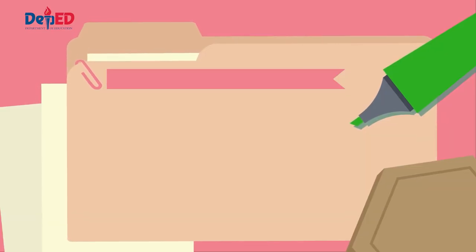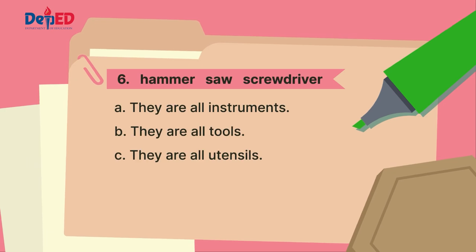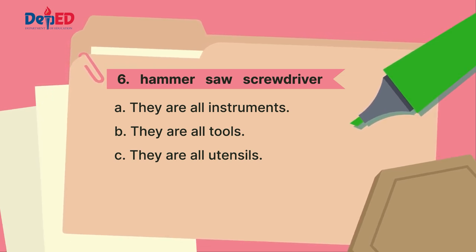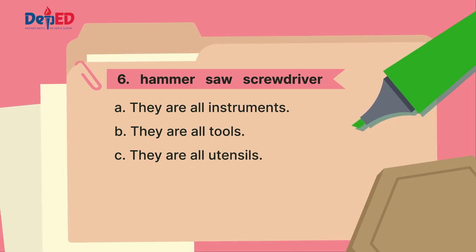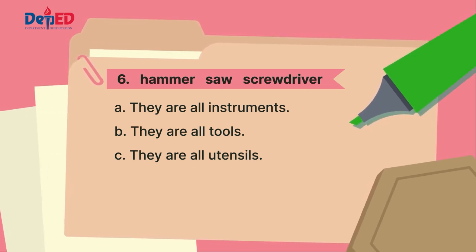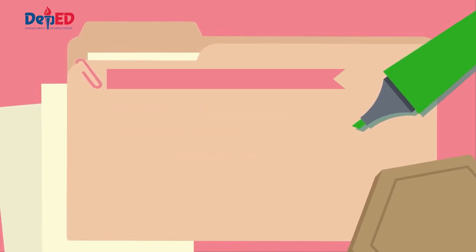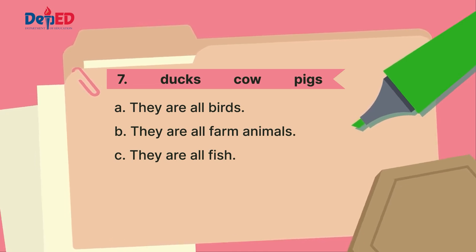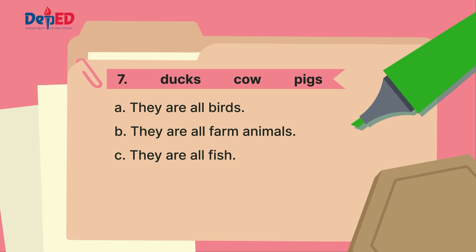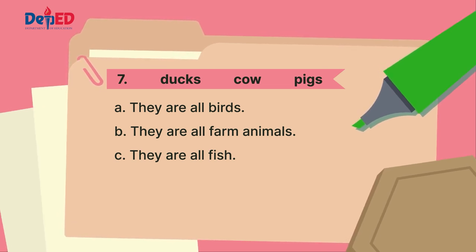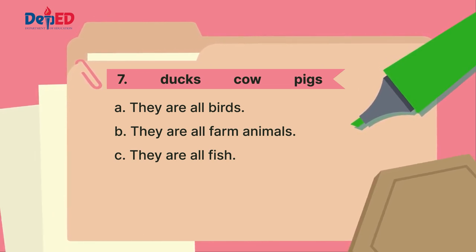And now, let us go to letter B, word classification. The words in the box for number six are: hammer, saw, screwdriver. Letter A: they are all instruments. Letter B: they are all tools. Letter C: they are all utensils. The words in the box for number seven are: ducks, cow, pigs. Letter A: they are all birds. Letter B: they are all farm animals. Letter C: they are all fish.